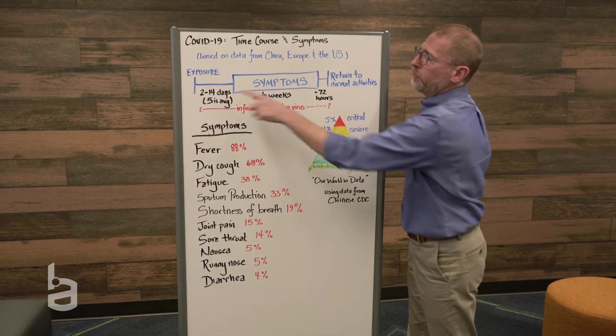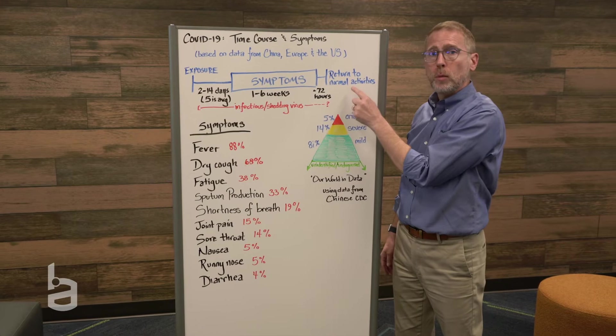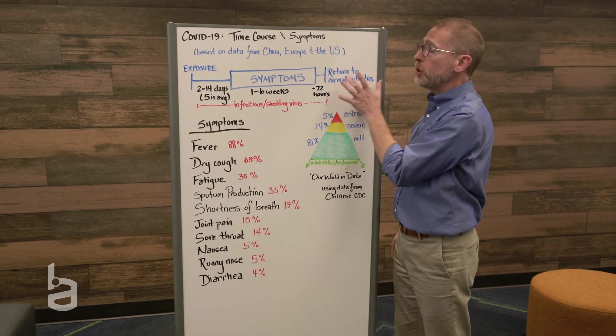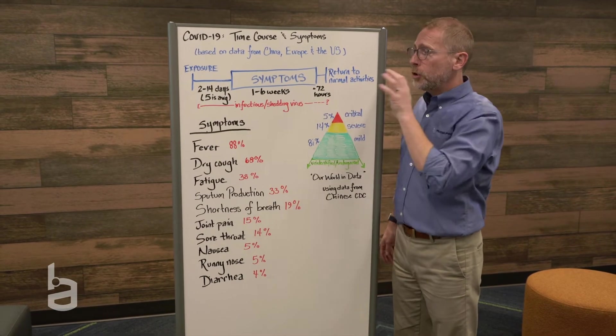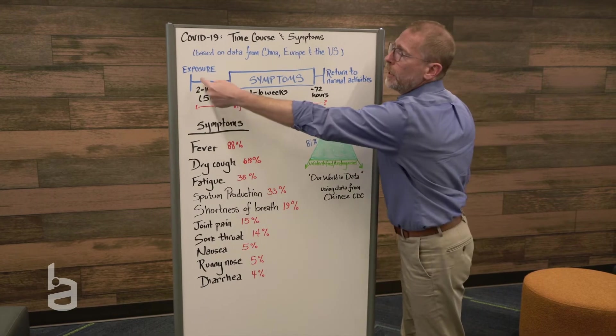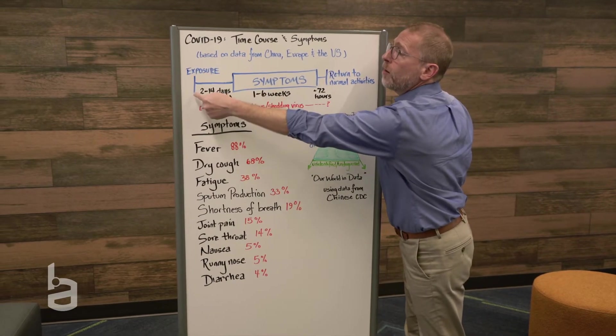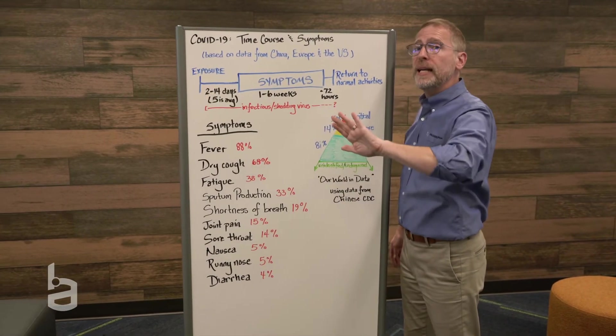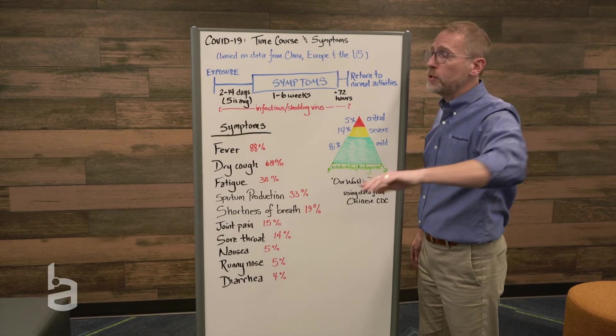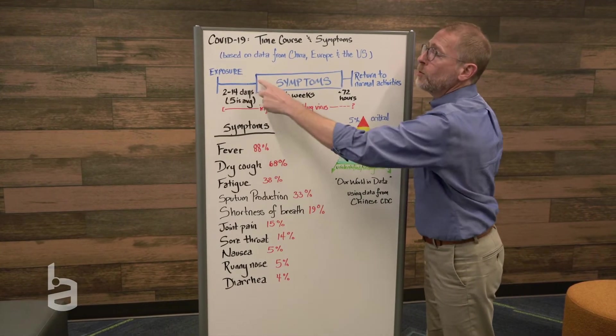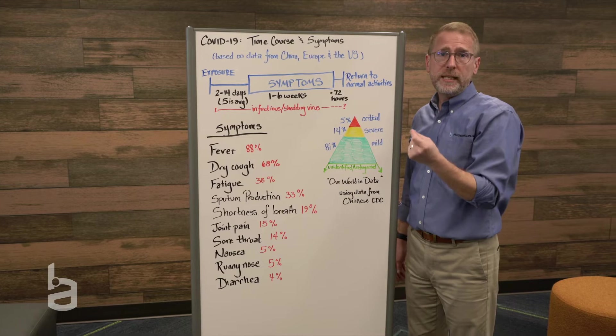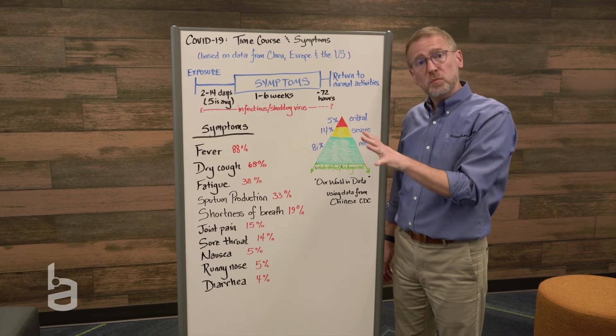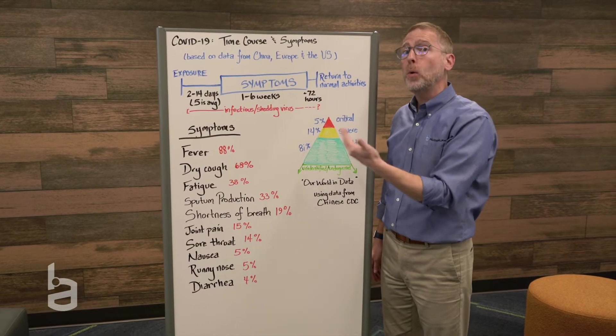So here's the time case from exposure to symptoms to return to normal activities. There are two key pieces that I want to note here. The first is that when you are first exposed, and we'll dig into that in a future episode, it can be anywhere between 2 and 14 days before you begin to show symptoms. The average is 5. That's a long window of time.